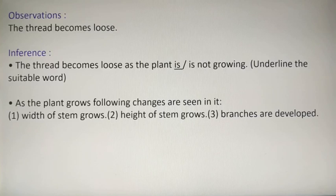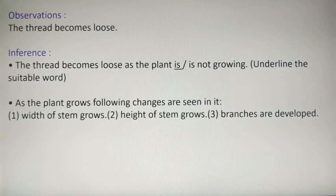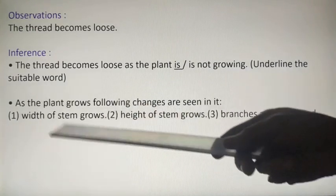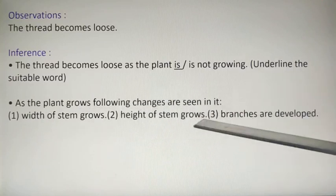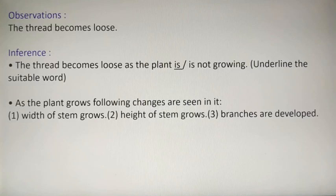As the plant grows, the following changes are seen: we just discussed that in plants mainly the width of the stem increases, the height of the stem increases, and branches are developed. These are the three changes we can see. Write down: width of the stem grows, height of the stem grows, and branches are developed. This was experiment number 2 from chapter number 2.